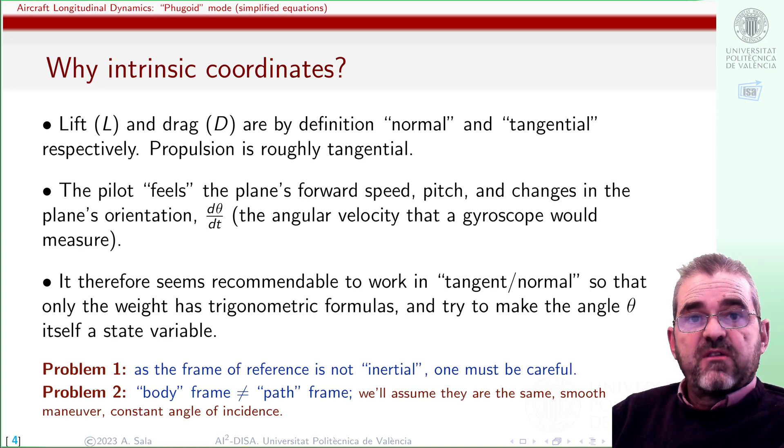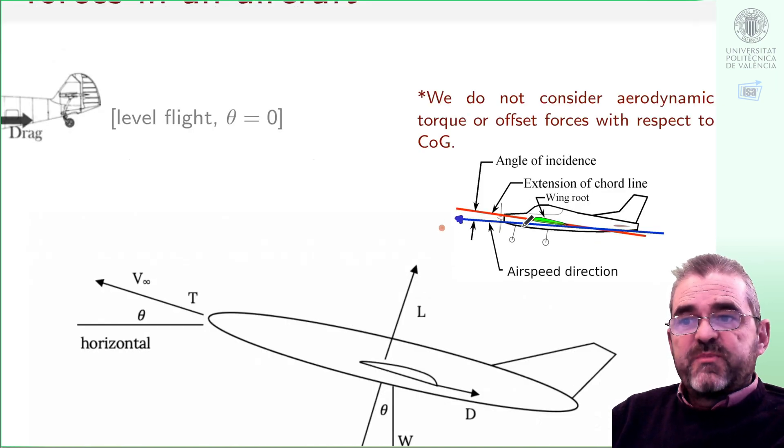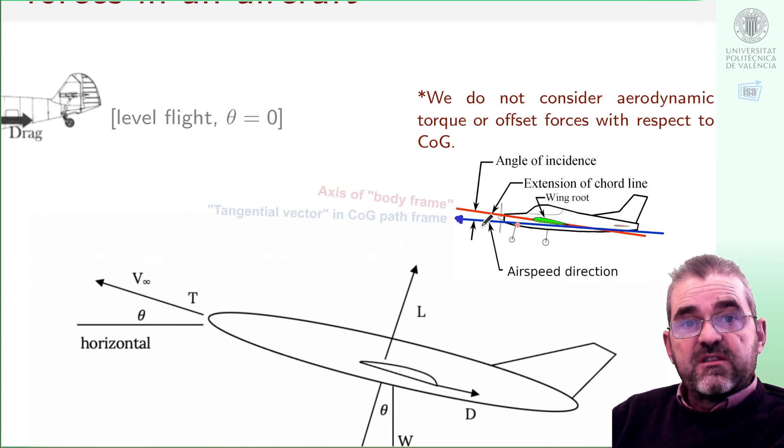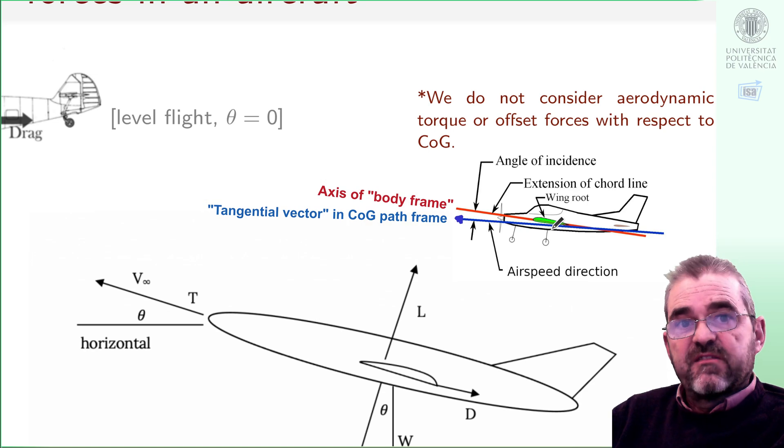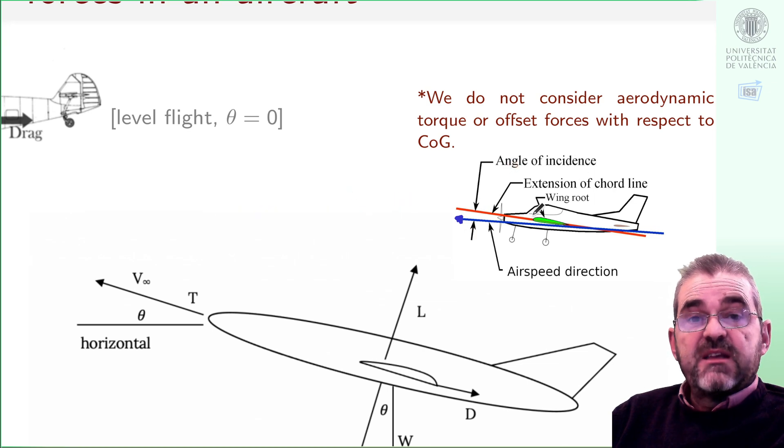A second issue is the fact that both the frame, the instruments in the aircraft, may not be exactly equal to path frame. The airspeed direction may be the blue arrow, the direction of the velocity of the center of gravity, at least of the relative velocity with respect to the outside air, and the plane is usually pitched away from that airspeed direction and the difference of those angles is called the angle of incidence. And it may change with time.